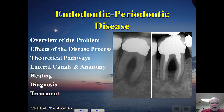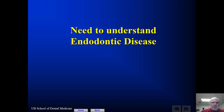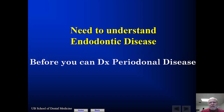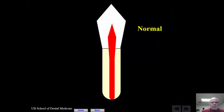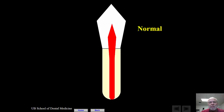We'll discuss now diagnosing the difference between endodontic and periodontal disease. One of the important things about being able to diagnose between the two is that you need to understand endodontic disease. Looking at a normal tooth, our diagnostic tests are normal — it responds to cold and heat normally, it's not sensitive to percussion or palpation. It's a normal tooth.